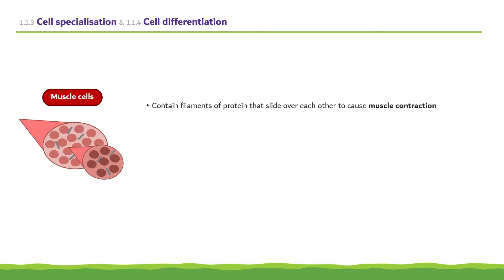Another specialized animal cell are muscle cells. They contain filaments of protein that slide over each other to cause muscle contraction. The cells are long to allow contraction to occur and also to enable them to contain a large number of mitochondria which are required to provide the energy for the muscle contractions.